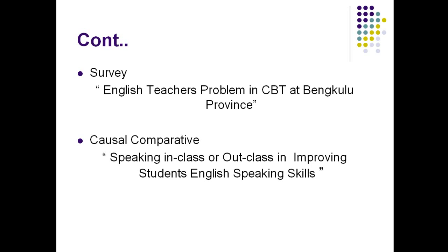Causal comparative research lists causes and then determines which cause contributes most to an effect. For example, if students lose motivation, we have causes A, B, C, and D. We want to know which among these four causes is the strongest contributor to the student having no motivation in speaking. That is causal comparative research in principle.